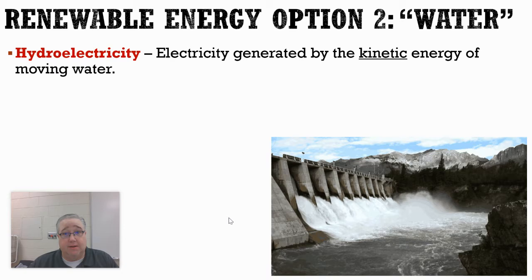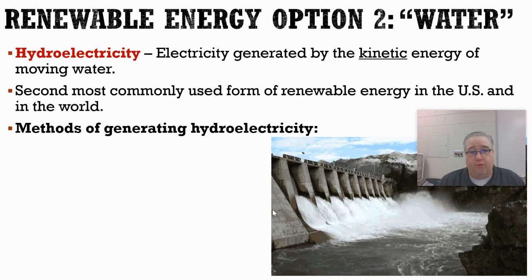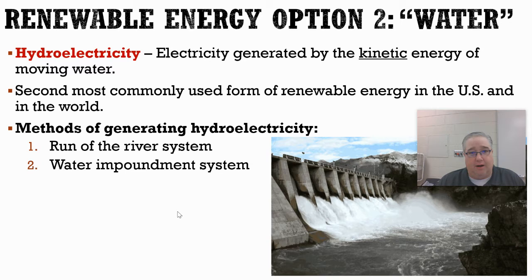Non-depletables are things we're not really worried about running out of; we're just worried about how we can use them more consistently. We're going to start with water. Water can be an extremely abundant resource, and as long as it's flowing, we can use the kinetic energy of that water to generate electricity — hydroelectricity. We're going to look at three different types of hydroelectric power: a run-of-the-river system, a water impoundment, and a tidal system.